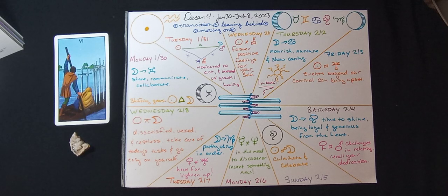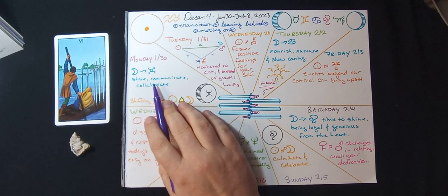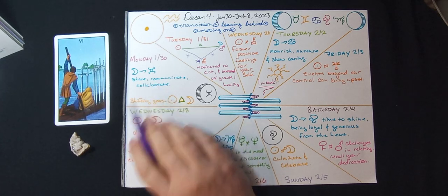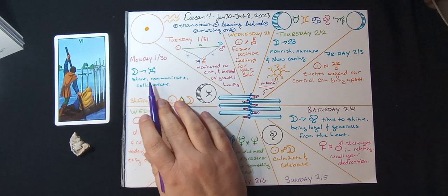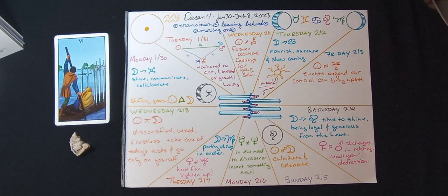And with that in mind let's preview the next ten days. We enter the fourth decan on Monday January 30. It's a day of transition. Moon moves into Gemini very early this morning drawing out our desire to play, to communicate, connect, and collaborate.